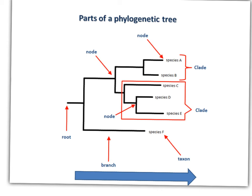A phylogenetic tree is read from the root to the taxon. The root is the common lineage from which all species on the tree are derived. The direction from the root to the taxon presents moving forward in time. The branch points where the tree splits are called nodes.